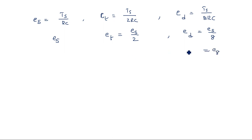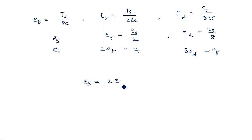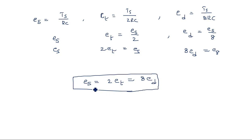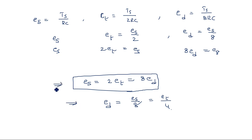The relation among these three parameters is: Es = 2Et = 8Ed. Alternatively, you can write: ED = Es/8 = Et/4. This is the relation among the three parameters — sweep error, transmission error, and displacement error — for a simple RC time-based generator circuit.